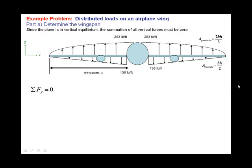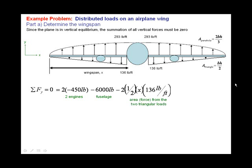Making use of this, in our summation of forces equation, we will include all of the forces acting on the system. We have two engines. They each weigh 450 pounds, and they are pointing down in a negative y direction. We have the fuselage, 6,000 pounds, also acting down, therefore a negative sign on that term. We have the area from the two triangular loads giving us a total force. Notice this has the variable x embedded in that part of this equation. And finally, we have the lift, the only positive force on this system, and we're using the equation for the area of a parabola that we discussed earlier.